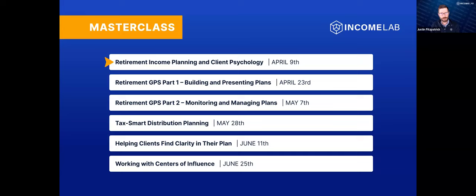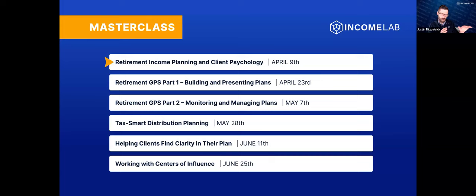The breakdown is in two parts. The first three sessions are focused on retirement income planning surrounding spending: how much can someone spend, what might their experience look like, how to talk with clients about that question, what adjustments to make, how to build plans, monitor plans, and manage plans. Then in the second half we'll get to more specialized areas — especially tax-smart distribution planning, which is a huge area — and then talking with clients in ways they can understand, and finally building your business with centers of influence.